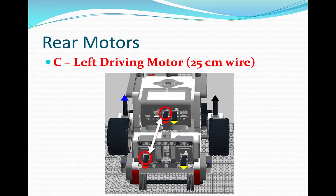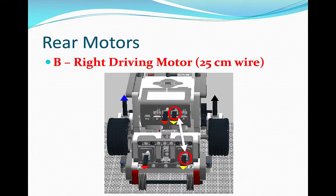First, the rear. C is connected to the left driving motor. Please use a 25cm wire. B is connected to the right driving motor. Also, 25cm wire.